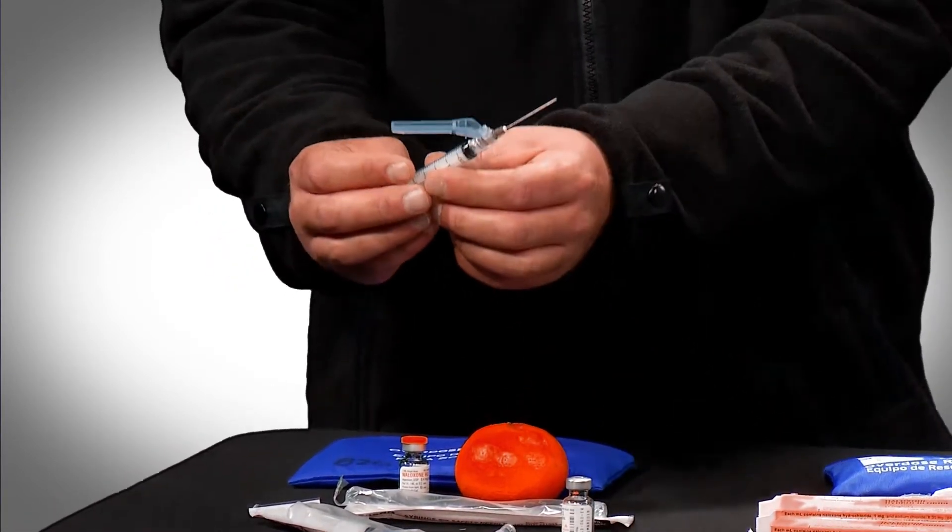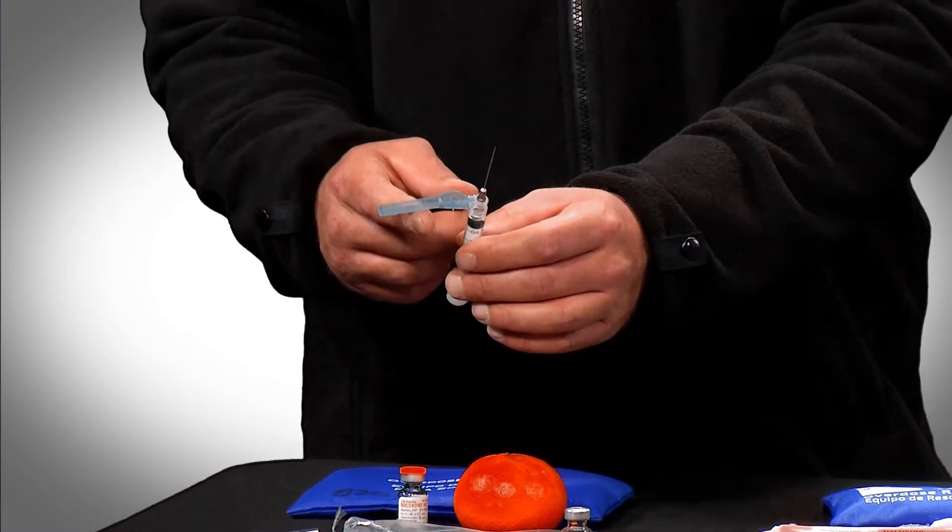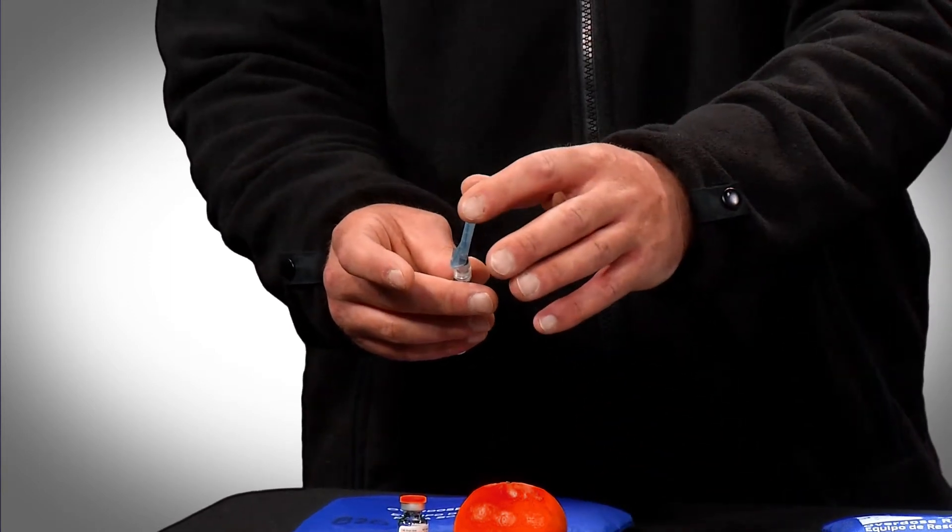Once you've administered Narcan in this formulation, you would then assume that the tip of that needle is contaminated with an infectious disease. That's what this guard is here for. You could either just push it closed and click it, and that protects it from poking somebody.